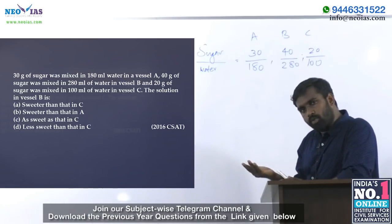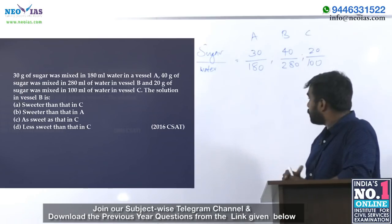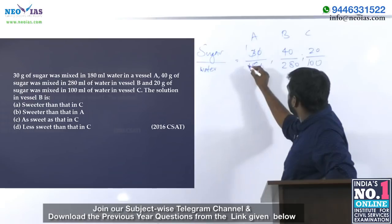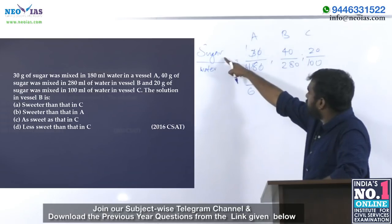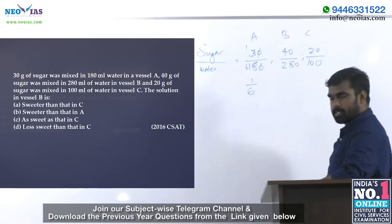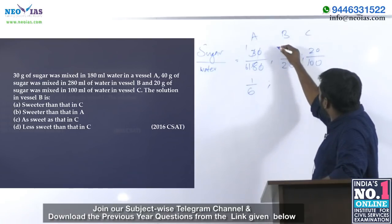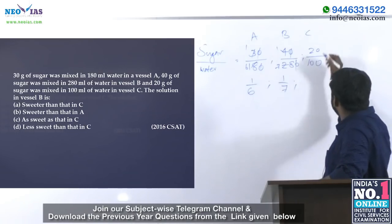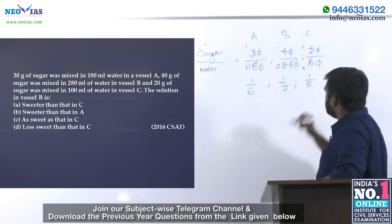By using the concept of ratio, we simplify each to its simplest form. Vessel A: 30 to 180 simplifies to 1 is to 6. Vessel B: 40 to 280 simplifies to 1 is to 7. Vessel C: 20 to 100 simplifies to 1 is to 5. Now it is easier to interpret the result.